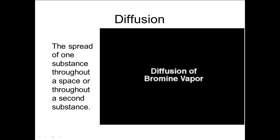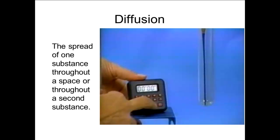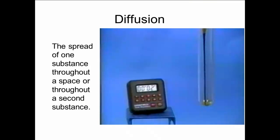In the video, we see bromine vapor diffusing through air. The timer is started when liquid bromine is added to the bottom of the test tube. We can see the brown gas advancing slowly up the tube.